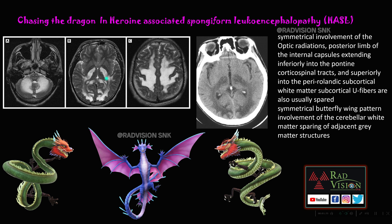There can also be involvement of the bilateral pontine corticospinal tracts and even the periventricular deep white matter or perirolandic subcortical white matter. Here you can see there is symmetrical involvement of the posterior limbs of the bilateral internal capsules and also the optic radiations. These hyperintensities mimic the dragons.